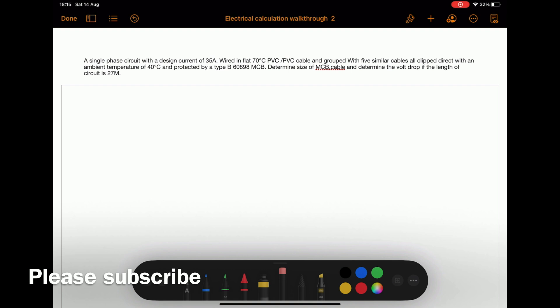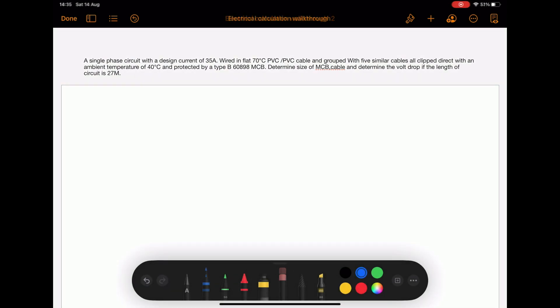I'm going to share my screen with you now and show you how I go through the process. First of all I always write down the design current even though we've been given it in the question, so design current is 35 amps. Then we need to know the size of the breaker, so the IN is greater than or equal to the design current, so the next size up is 40 amps.